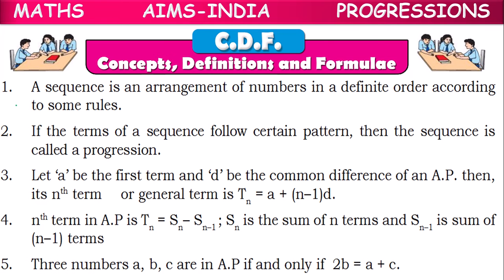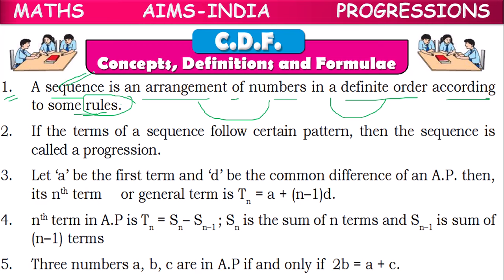The first point is: a sequence is an arrangement of numbers in a definite order according to some rules. The group of numbers which are in a definite order and which obey some rules — that arrangement of numbers is called a sequence. If the terms of a sequence follow a certain pattern, then the sequence is called a progression.